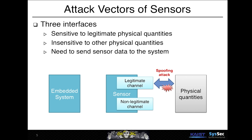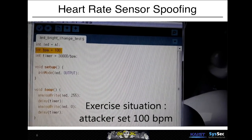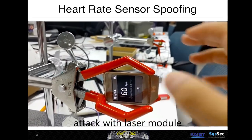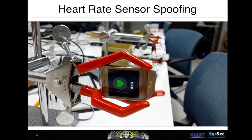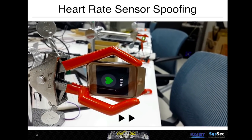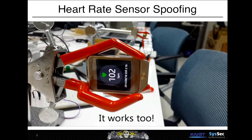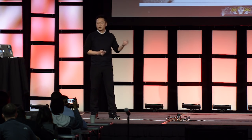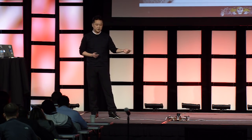The first attack is a spoofing attack on the legitimate channel. In the following demo, I'll show a heartbeat sensor counting the number of heartbeats. Using a green laser pointer, we can spoof the number of heartbeats — setting it to 100 beats per minute. This works because the heartbeat sensor is designed to detect movement on your wrist using a green laser sensor.